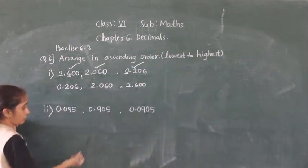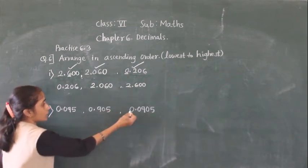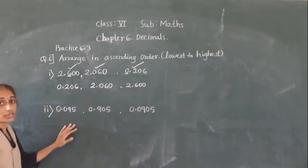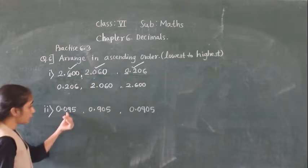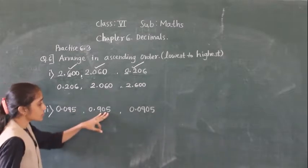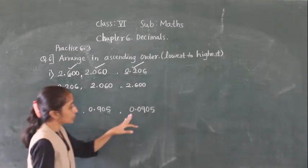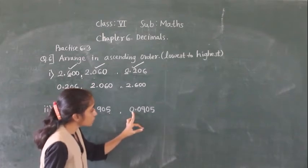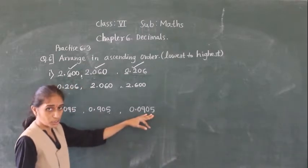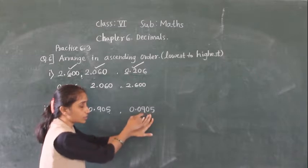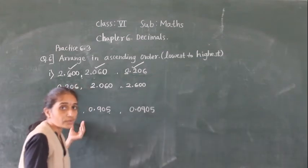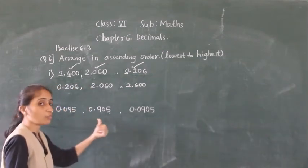Next example: arrange 0.095, 0.905, and 0.0905. First check the digits after the decimal point. Here 3 digits are given, here also 3 digits are given, but in 0.0905, after the decimal point 4 digits are given.